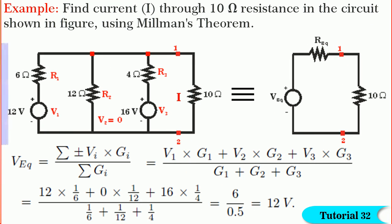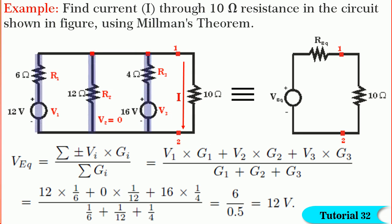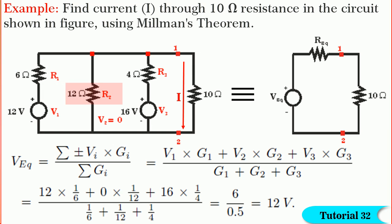Friends, consider the network shown in figure to find current I through the 10 ohm resistance using Millman's theorem. By observing the network, we find three parallel branches across a load resistance of 10 ohm. One branch has a voltage source of 12 volts in series with 6 ohm — let it be V1 and R1. Another has only a resistance of 12 ohm with no voltage source, so V2 = 0 and R2 = 12 ohm. The third branch has a voltage source of 16 volts in series with 4 ohm — let it be V3 and R3.